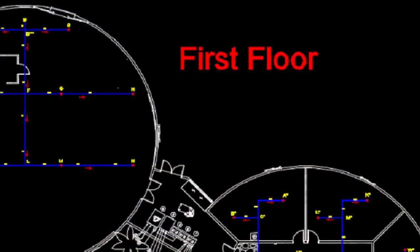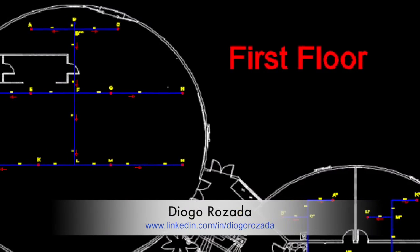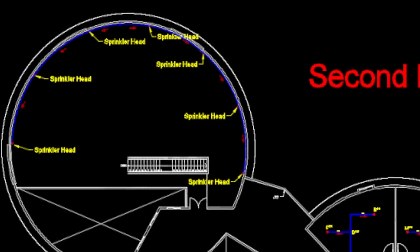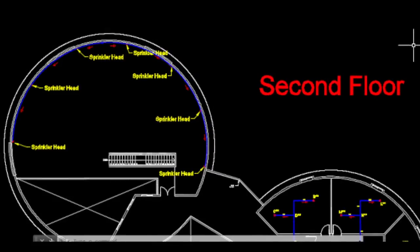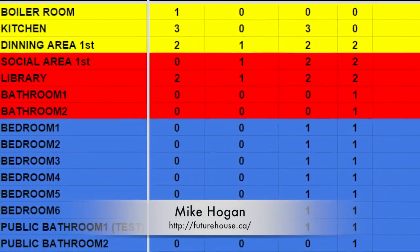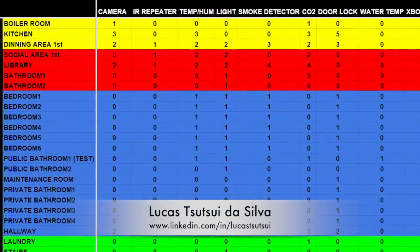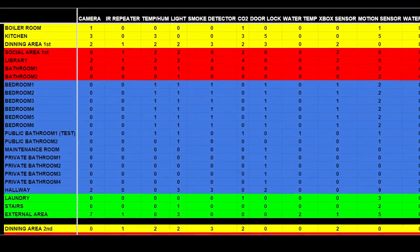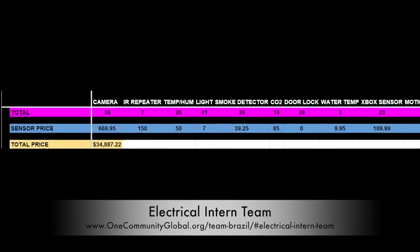Jogo, from the hydraulics intern team, updated the fire sprinkler system to include a horizontal sprinkler solution for the kitchen of the city center. He also forwarded the potable water design of Villages 5 and 6, began the design for Village 3, and calculated the proper size water reservoir for all three of these villages. Last but not least, Mike Hogan guided Lucas Tetsui Da Silva and the electrical intern team on the control system for the city center. Lucas created a table showing how many sensors each room will require, and created a price estimate table for the sensors.